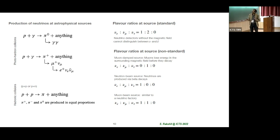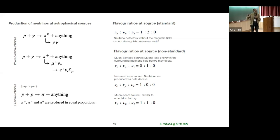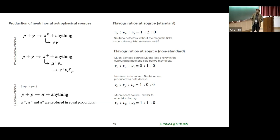In astrophysical environments, photons can interact with background photons, or protons interact with background photons, producing charged pions and neutral pions. Neutral pions give you photons, and charged pions give you neutrinos. So you expect cosmic rays, photons, and neutrinos. From these ratios, you expect that at the source the flavor ratio should be 1:2:0. However, there are some extreme scenarios where muon beams can be blocked and other non-standard source scenarios.